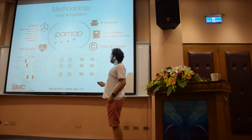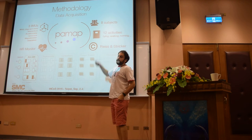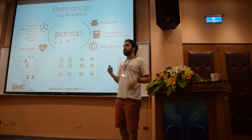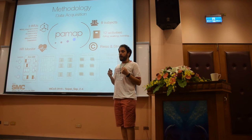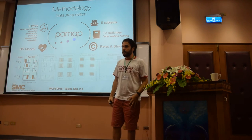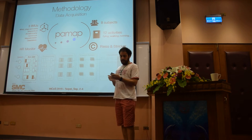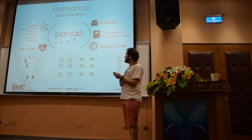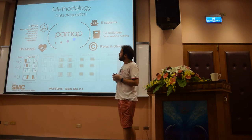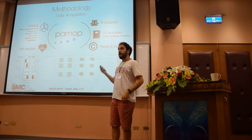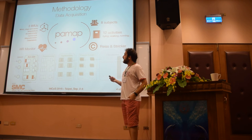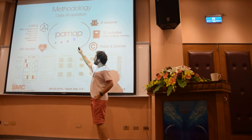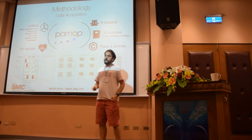The first step in the activity recognition chain is data acquisition. For physical activity recognition, we can usually find two different approaches: ad hoc sensors placed across the body of a person, and pervasive sensors such as those found in smartphones or smartwatches. In this case, we have used a publicly available dataset at the University of California, Irvine, known as PAMAP, which stands for Physical Activity Monitoring for the Aging Population. This dataset was introduced by Reiss and Stricker in 2011.